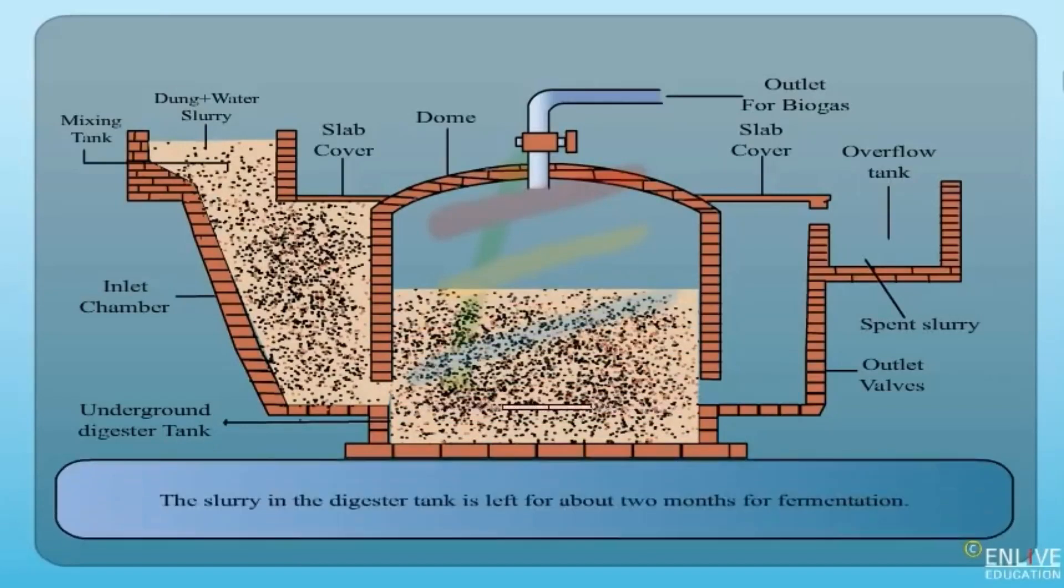Gas collection system: Connect a pipe from the gas outlet at the top of the dome to a gas storage container. The container should have a water-filled chamber to act as a gas holder. As biogas is produced, it will displace the water in the chamber, causing the gas holder to rise. This provides constant pressure for gas distribution.